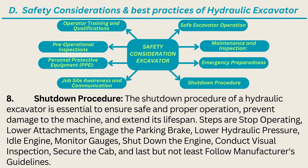8. Shutdown procedure: The shutdown procedure of a hydraulic excavator is essential to ensure safe and proper operation, prevent damage to the machine, and extend its lifespan. Steps include: stop operating, lower attachments, engage the parking brake, lower hydraulic pressure, idle the engine, monitor gauges, shut down the engine, conduct a visual inspection, secure the cab, and follow the manufacturer's guidelines.